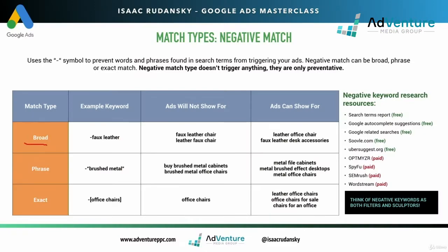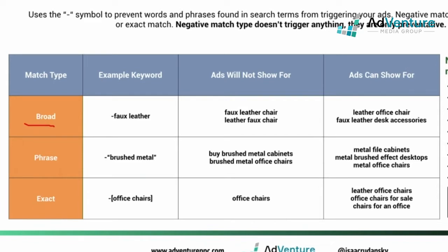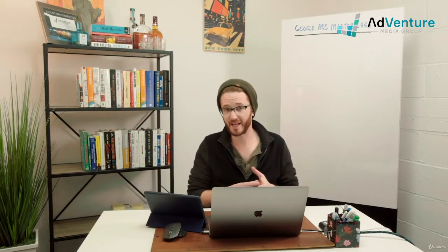First we'll take a look at a broad match example. Broad match is just the negative sign and the keyword. In the same way that broad match positive keywords include the most potential search terms, negative broad excludes the most amount of potential search terms. For example, when I do negative faux leather, I'm telling Google that anytime faux leather shows up in a search term, doesn't matter what else — if it's there, don't trigger my ad.